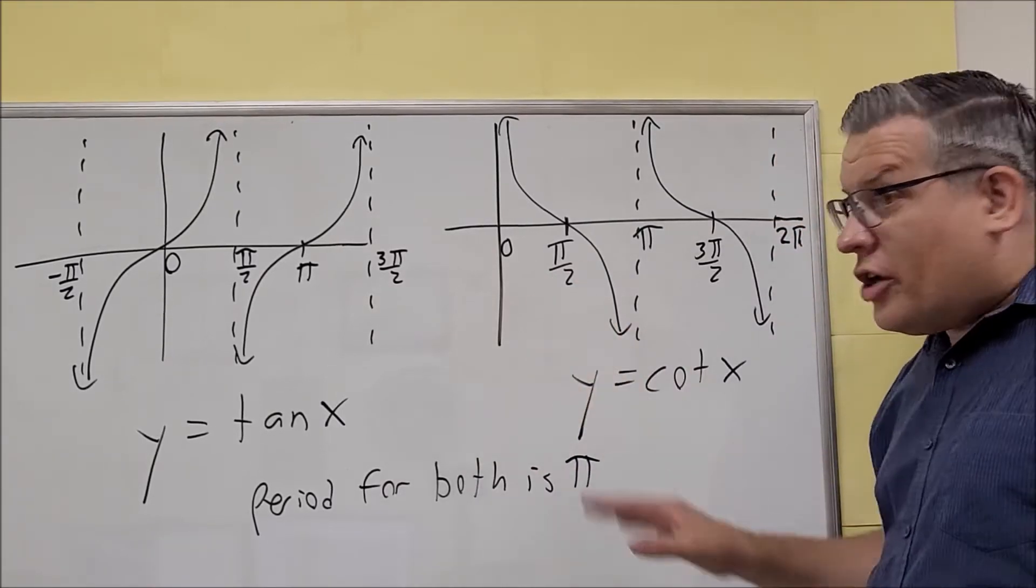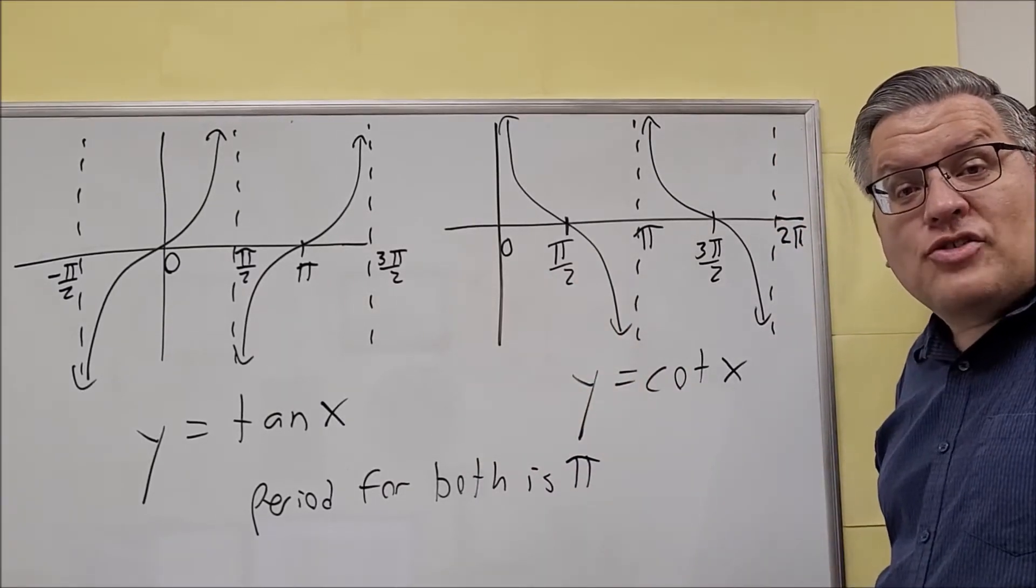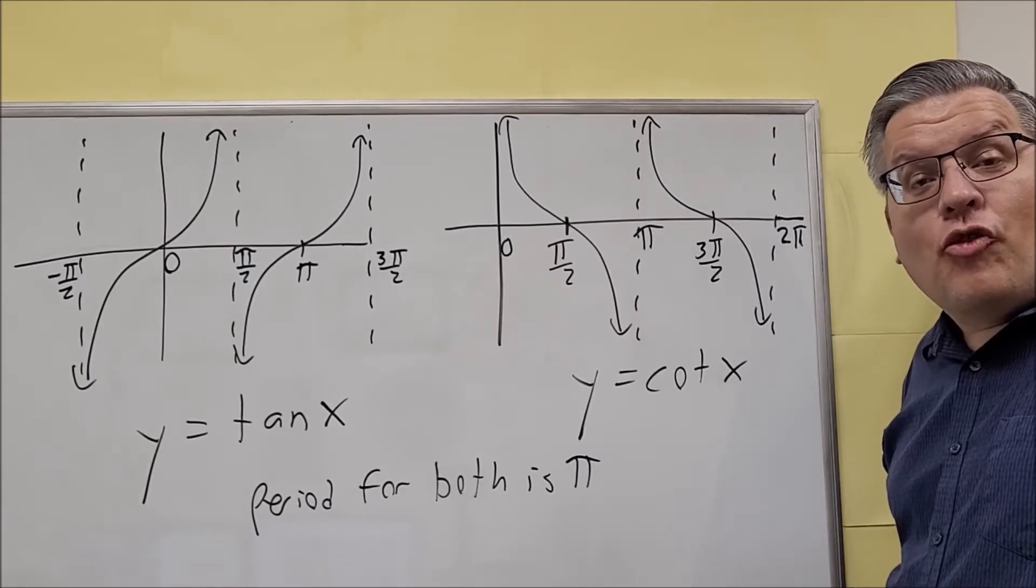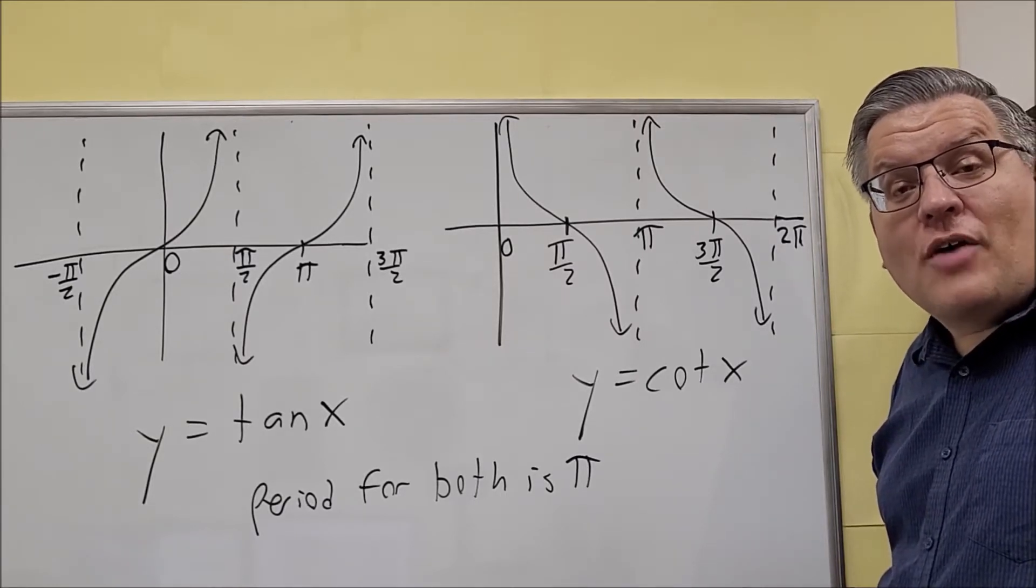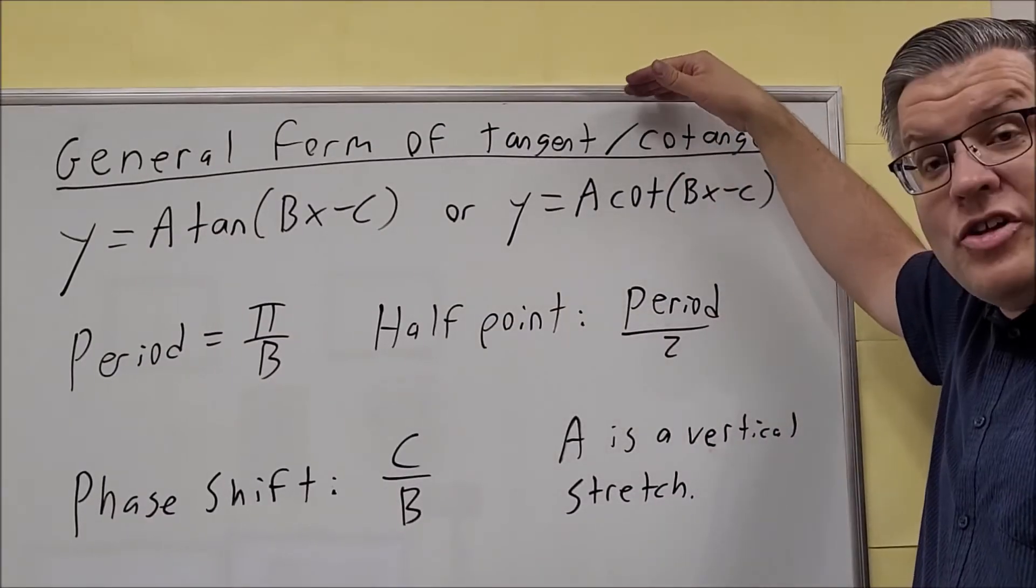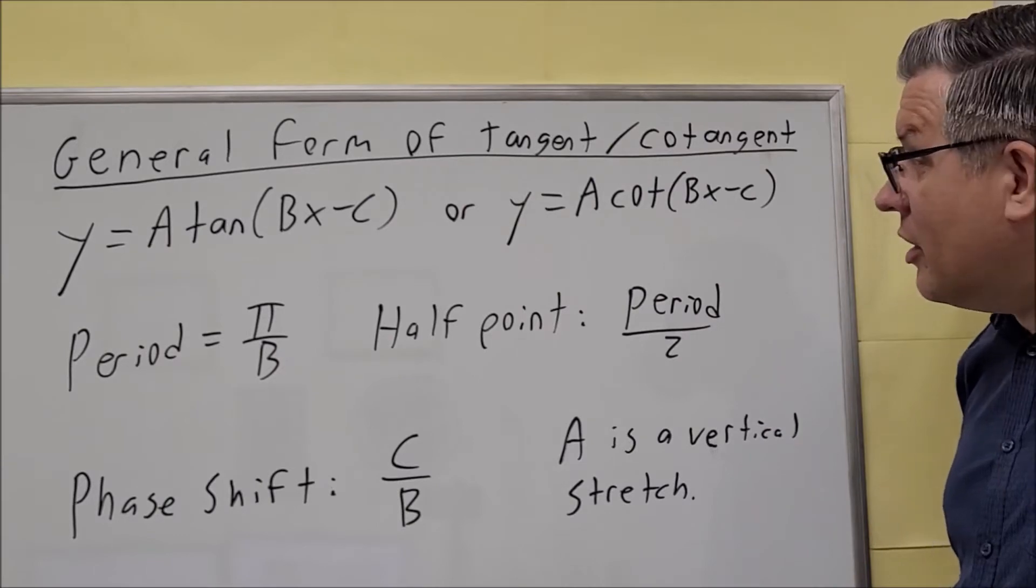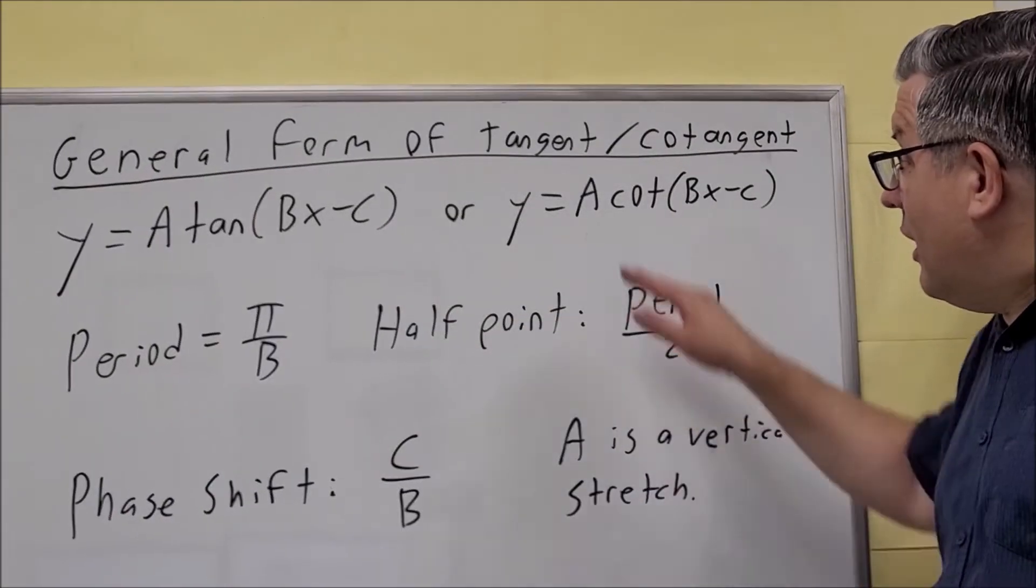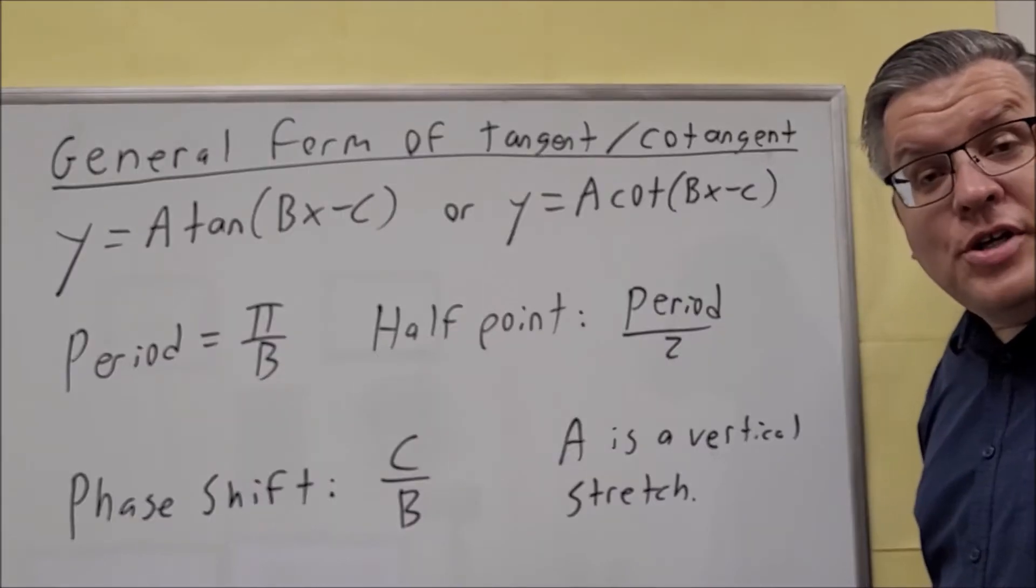So now that we've taken a look at the general graphs, what we'll do next is we'll take a look at some formulas that we can do looking at the general form of the tangent and cotangent graphs. Next, we're going to talk about the general form of a tangent and cotangent, as you can see here. We have a tangent bx minus c and a cotangent bx minus c.